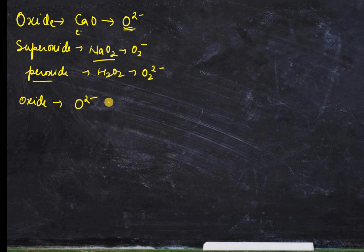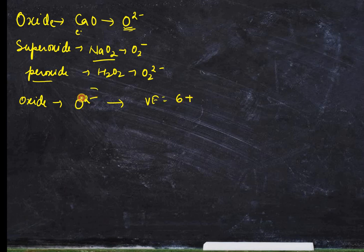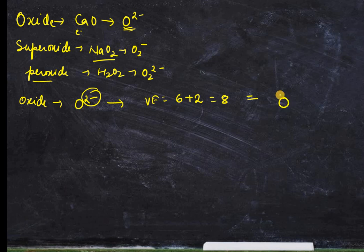Let's draw the Lewis structure for oxide, which is O²⁻. Since there is only one oxygen we don't have to think much — we just need to rearrange the electrons around it. Total valence electrons: oxygen has 6 electrons, and since there is an extra charge we add that too, so the total will be 8 electrons. You just need to add all 8 electrons around the oxygen.